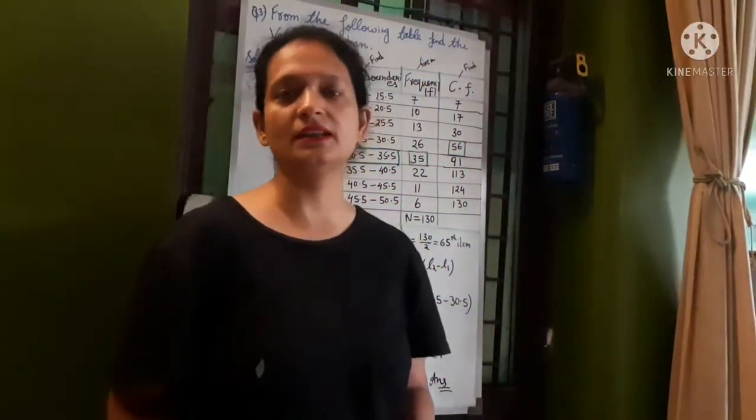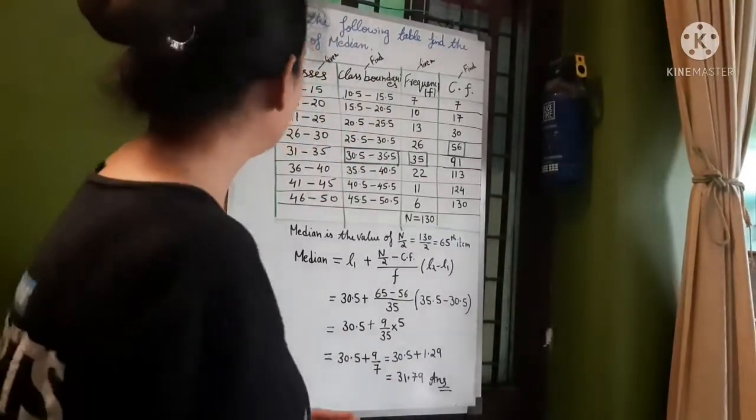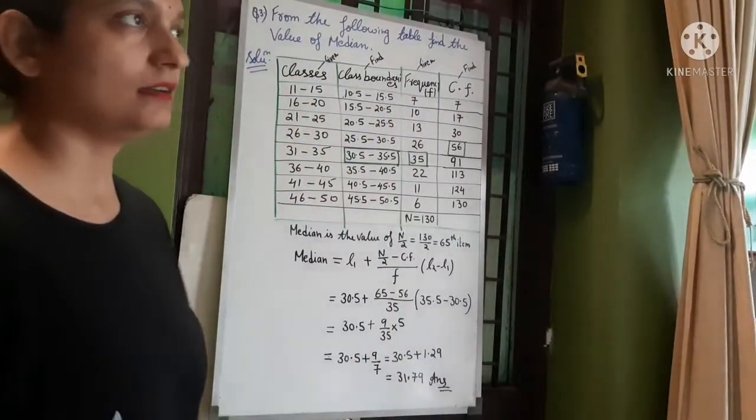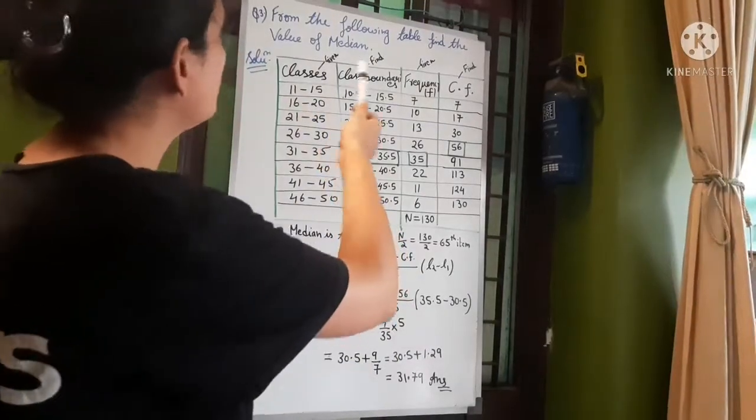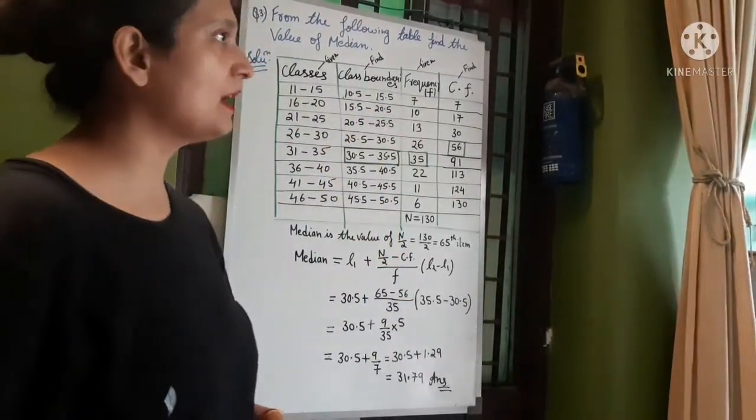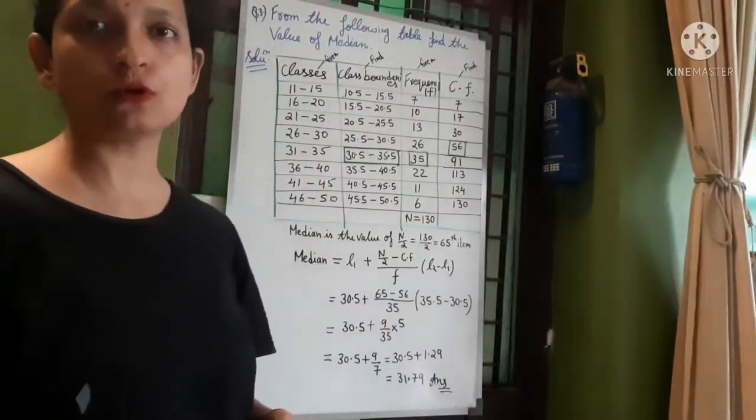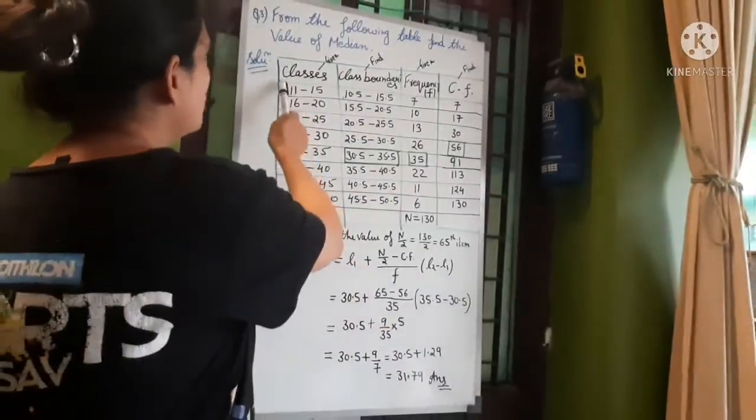Very good morning to all my dear students. Today we are going to study question number 3. From the following table, find the value of median. This table has two columns given: one of the classes given and one of the frequency given.